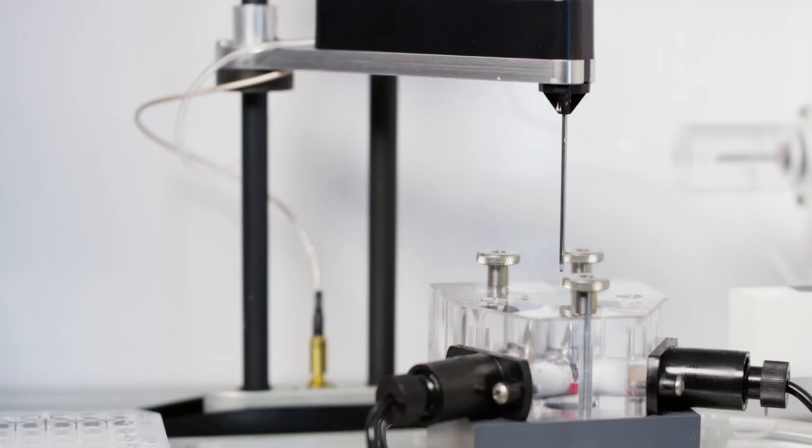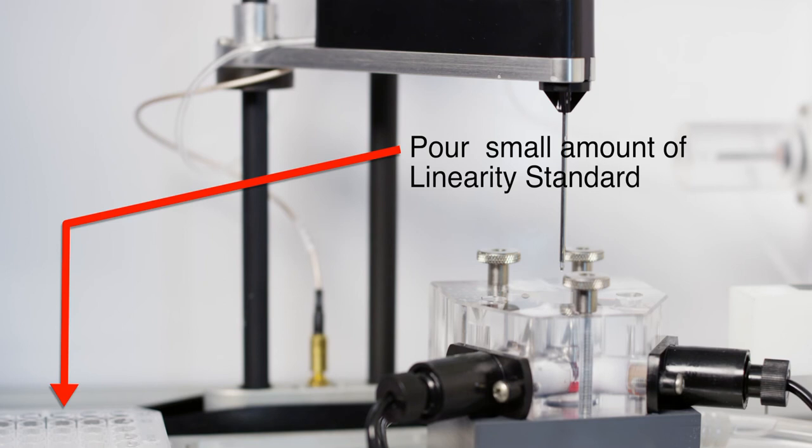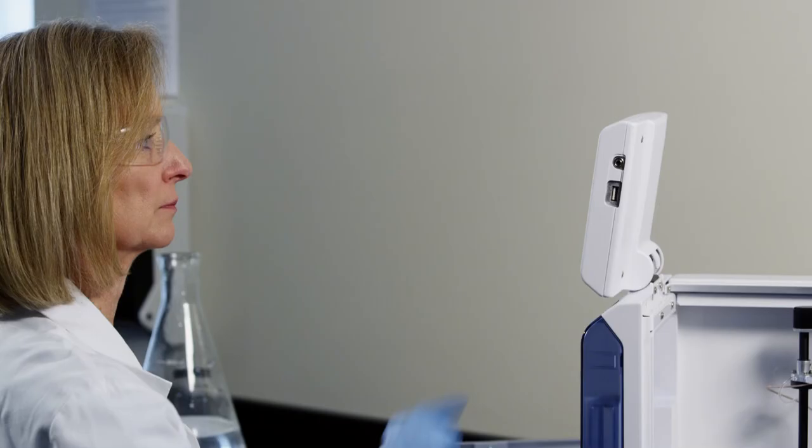Pour a small amount of linearity standard in a test tube or multi-well plate. Configure the instrument to use the chemistry required for the specific linearity solution. Run the sample.